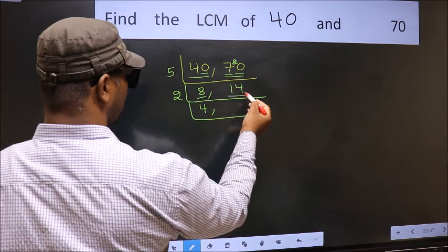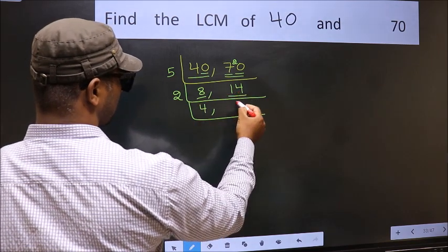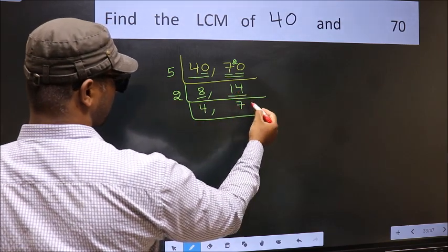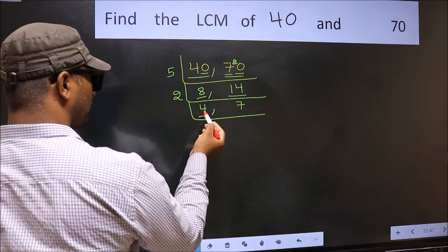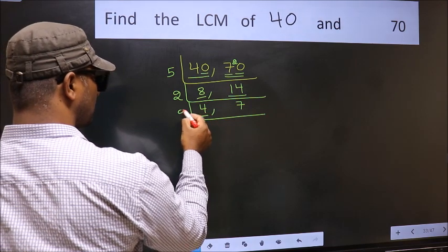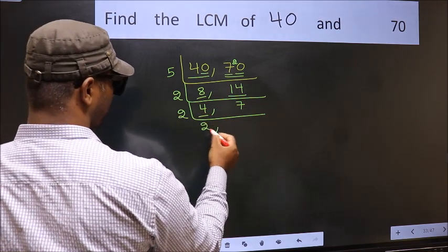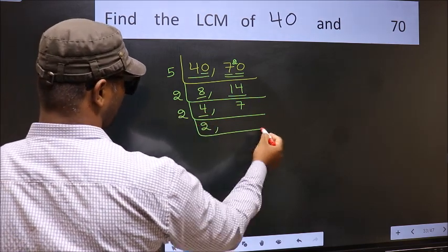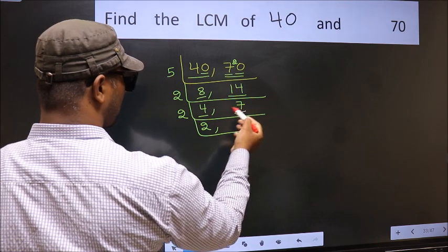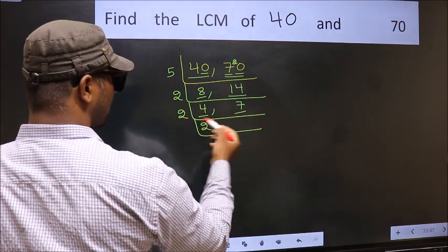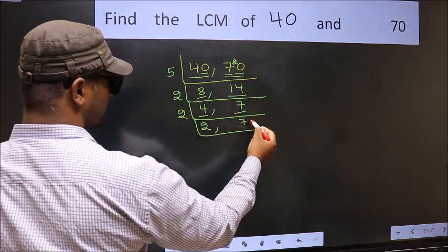The other number is 14. When do we get 14 in the 2 table? 2 sevens are 14. Now here we have 4 — 4 is 2 twos are 4. The other number 7 is not divisible by 2, so we write it down as it is.